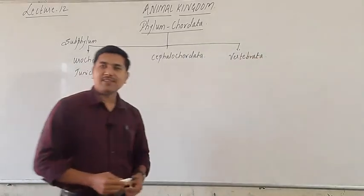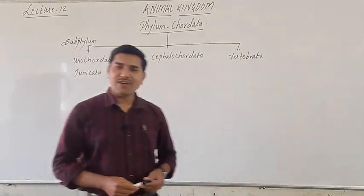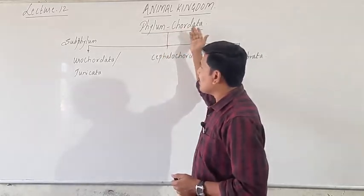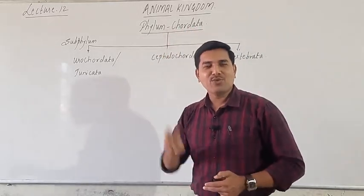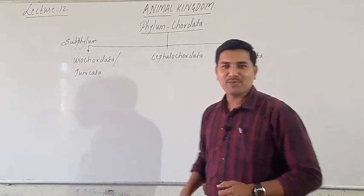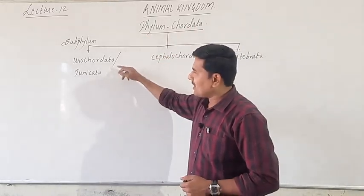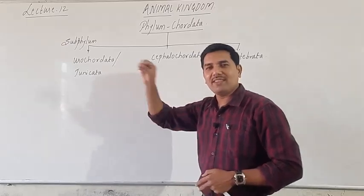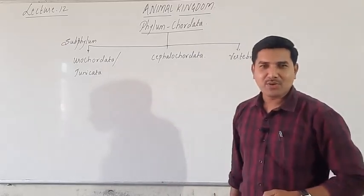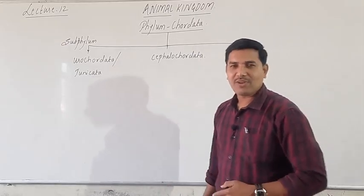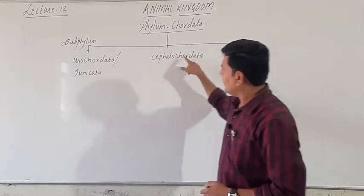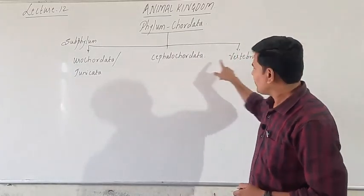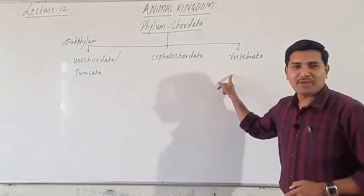Look at the three subphyla. Phylum Chordata is divided into three subphyla. The first subphylum is Urochordata, also called Tunicata. The second subphylum is Cephalochordata, and the third subphylum is Vertebrata. These are the three subphyla of phylum Chordata.